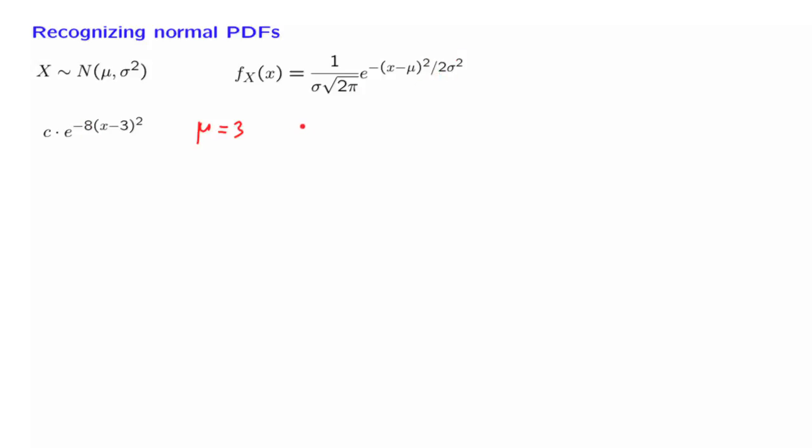and whose variance can also be found by matching this constant that appears here with a number 8. This constant here is in the denominator. So we have a term 1 over 2 sigma squared. This must be equal to 8. And from this, we can infer that the variance of this random variable is equal to 1 over 16.